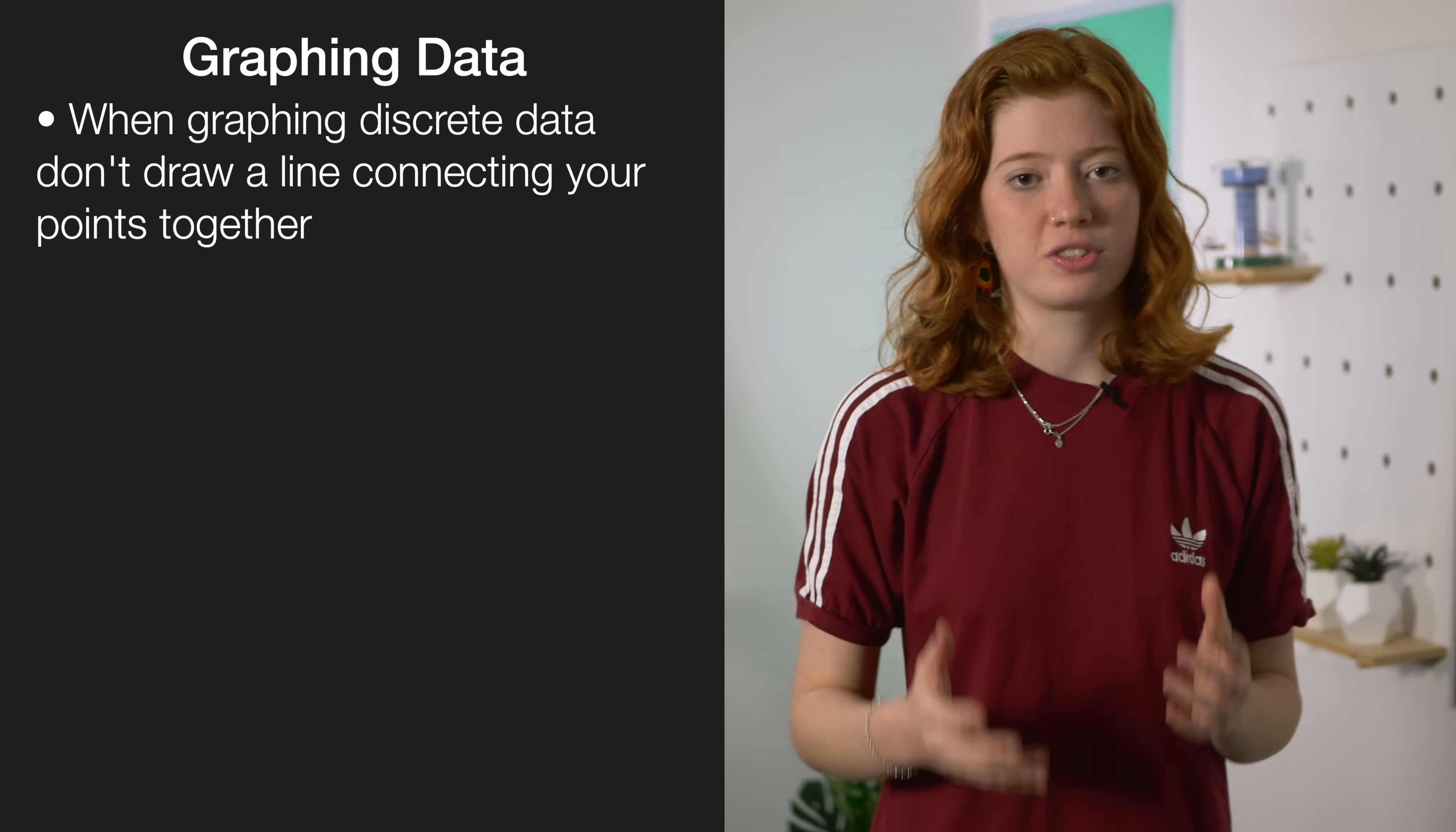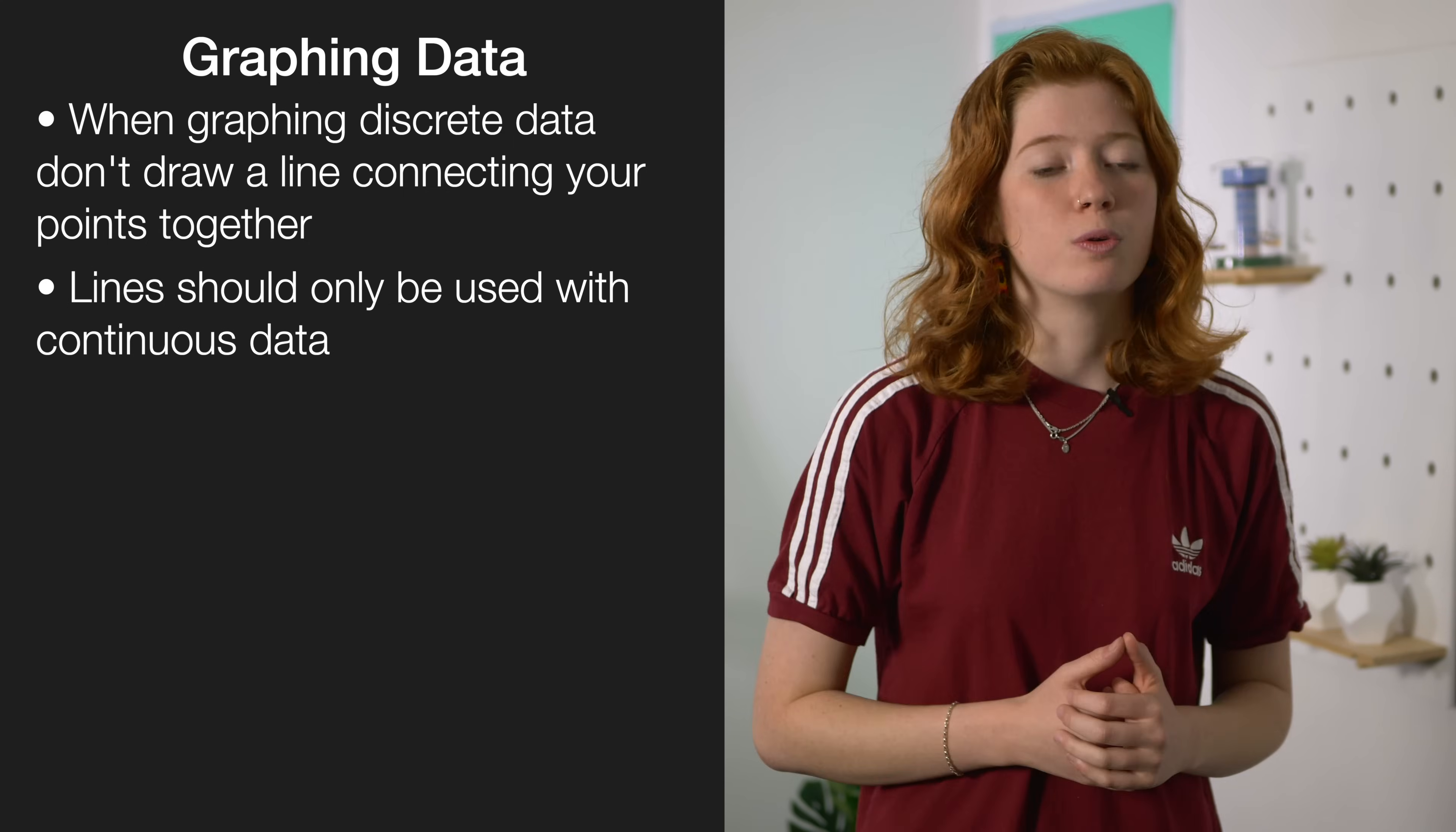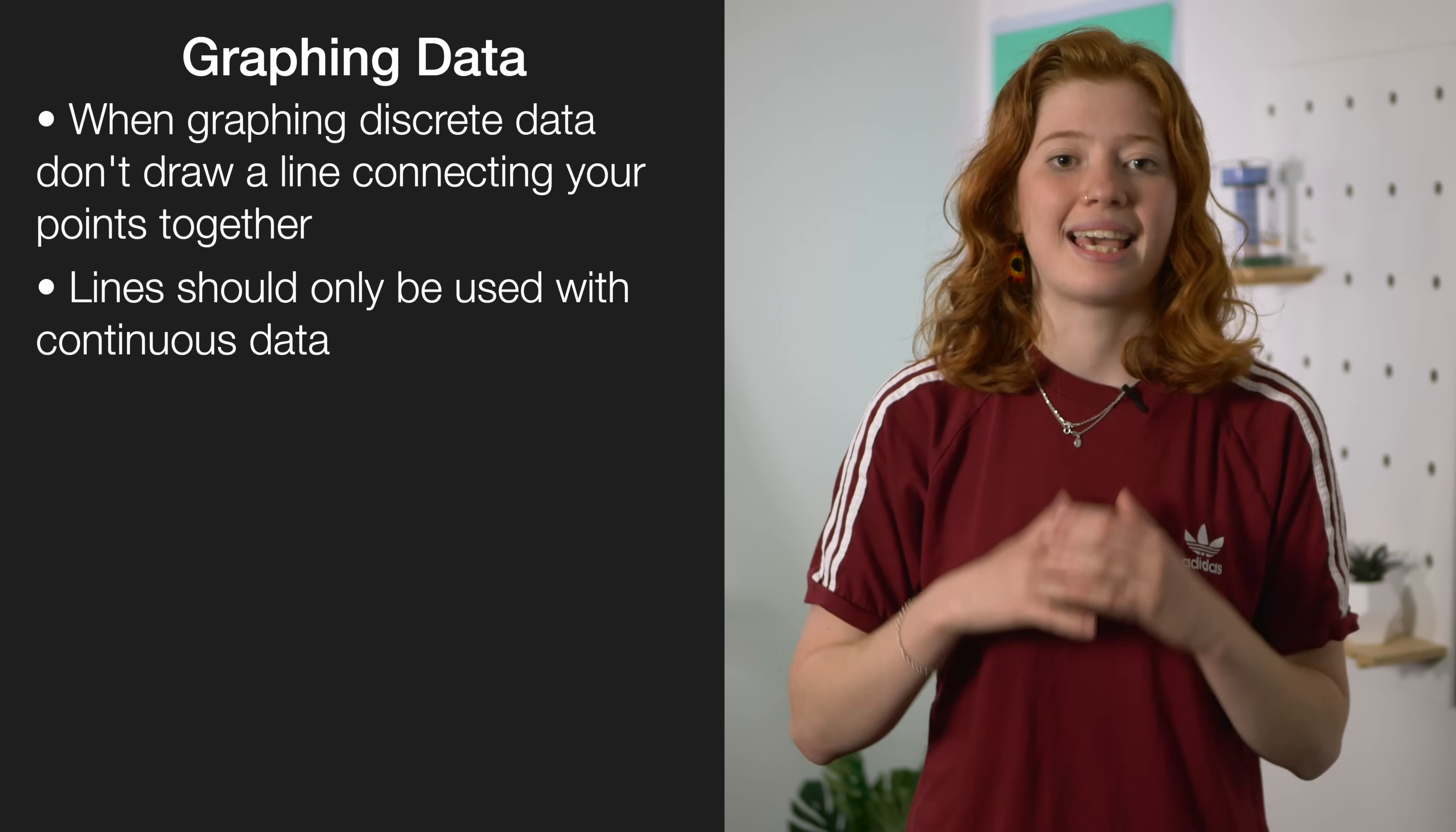A final important thing to remember is how to graph continuous data as well as discrete data. It's really important to remember here that when you're graphing anything that's discrete such as the number of rabbits in a field you don't want to draw a line connecting your dots together. Just stick with the dots. Lines and graphs should only be used when you're using continuous data that can take any value.